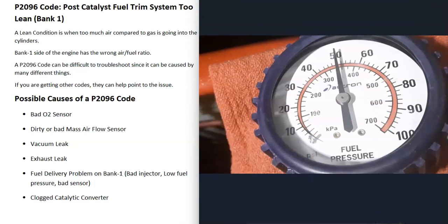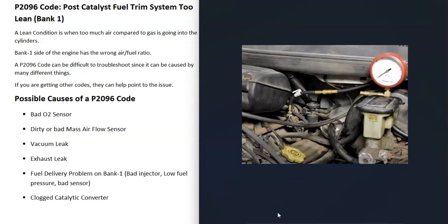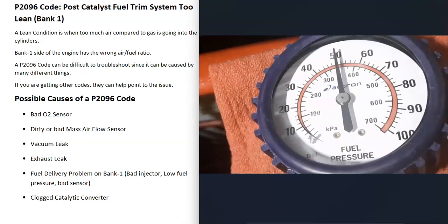The next possible cause is a fuel delivery problem on bank one — something like a bad injector, low fuel pressure, or a bad fuel rail pressure sensor. To check this, attach a fuel pressure gauge to the fuel rail, start the engine, and check the fuel pressure. Look up what your vehicle's fuel pressure is supposed to be. For example, if the engine should run at 60 psi but it's reading 50 psi, there's a fuel delivery problem — possibly a bad fuel pump or clogged fuel filter.